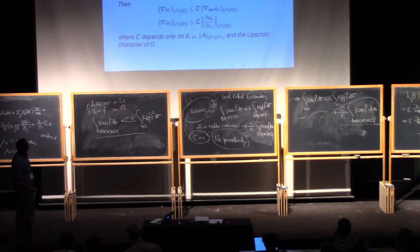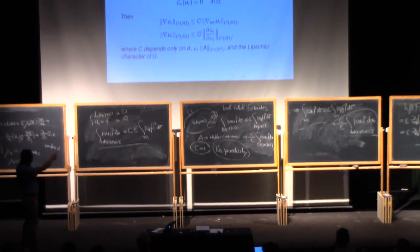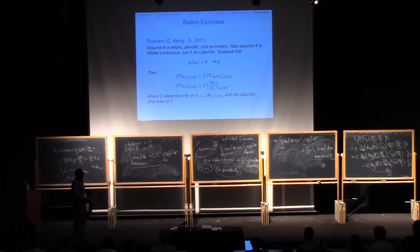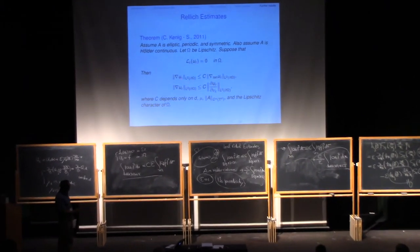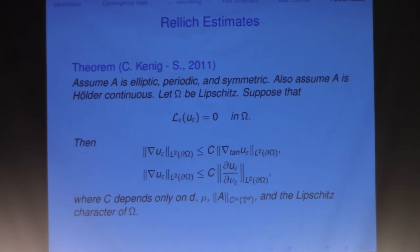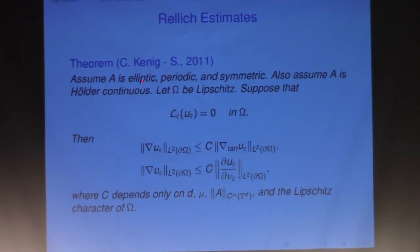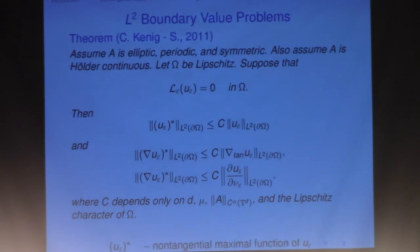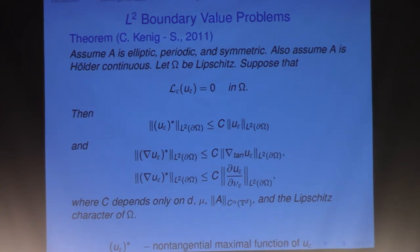This was proved by Kenig and myself back in 2011 using integration by parts. Here we present a different proof. You get a full-scale estimate where the gradient at the boundary is controlled by the tangential and co-normal derivatives, with a constant independent of Y. The coefficients are assumed to be elliptic, periodic, symmetric, and Hölder continuous, and omega is Lipschitz. With this you can solve the L2 boundary value problem using the method of layer potentials, using the Rellich identity to prove the non-tangential maximum function estimate.